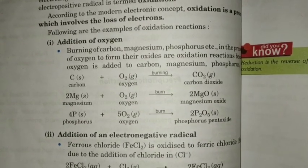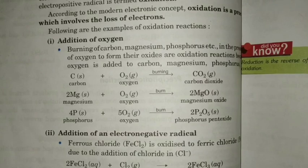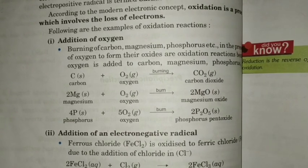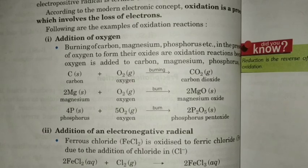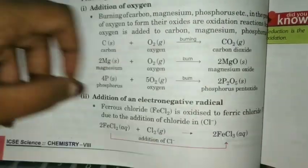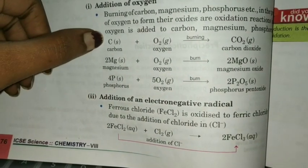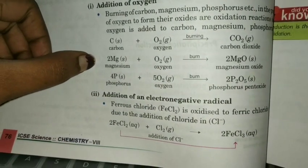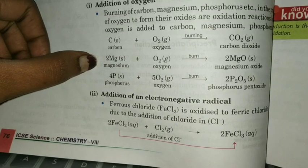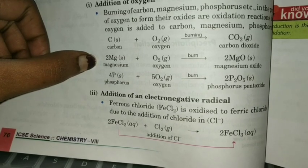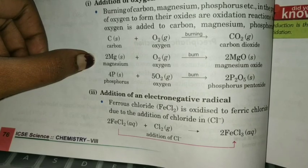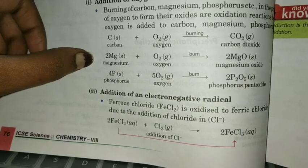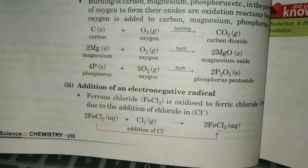Let's discuss some examples. First, C plus O2 gives CO2 in burning — carbon changes to CO2, addition of oxygen takes place, so carbon is getting oxidized. Here also magnesium converts into MgO when supplying oxygen — addition of oxygen takes place, so this is also an oxidation reaction.